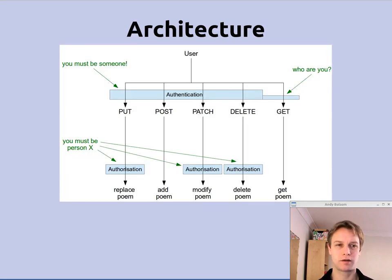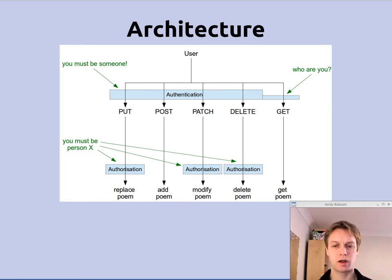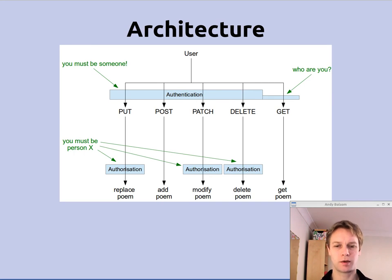So how does the architecture of this work? We start at the top — there's a person using the API — and there are two basic layers of security we need to think about. One is called authentication, and one is called authorization. Authentication basically means finding out who someone is, and authorization means finding out what they're allowed to do because of who they are.